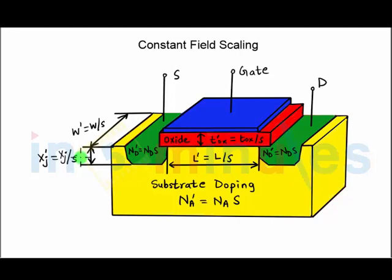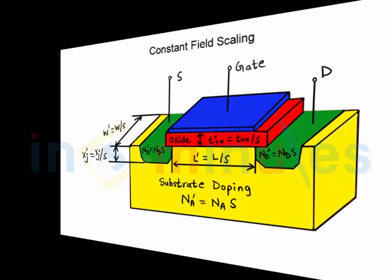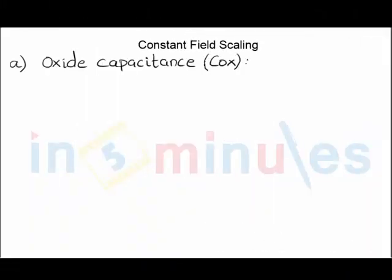Let's go ahead and see what is going to happen on some of the different parameters with constant field scaling. Let's start with oxide capacitance.